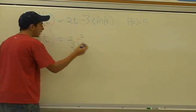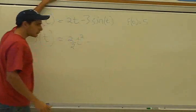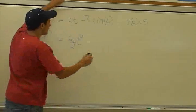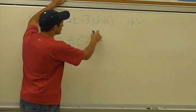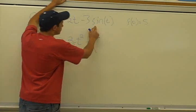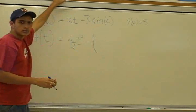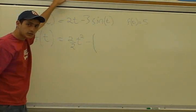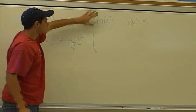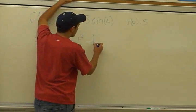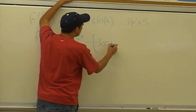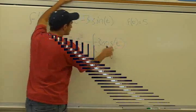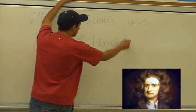And then the second term, you just take the antiderivative of this. And that's going to be, since the antiderivative of sine of t is negative cosine of t, and that's what we need right here. So it'll be negative 3 cosine of t. So the derivative of negative cosine will give us a sine.